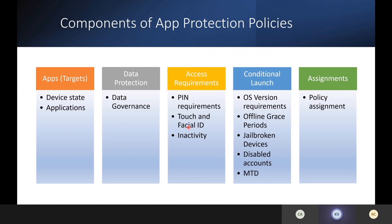What makes up the components of Intune app protection policies? Number one, we have the apps and the device state. We target unmanaged devices — BYOD — and very specific applications that we want to apply governance to. We also have a whole myriad of data protection settings, which we call data governance. I'll do a demo to show you exactly what that means.